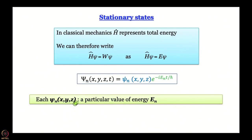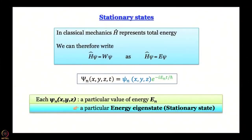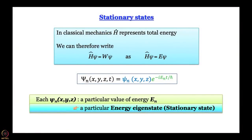If we work with the time-independent, space-dependent part ψₙ(x,y,z), this wave function represents a particular value of energy Eₙ. We can say that ψₙ represents a particular energy eigenstate, and it is the time-independent energy eigenstate. This is essentially the stationary state that Bohr had introduced in a different context.